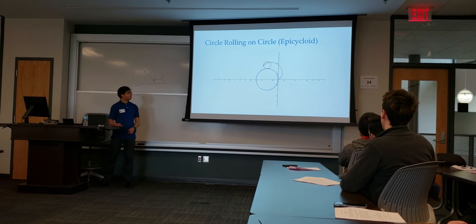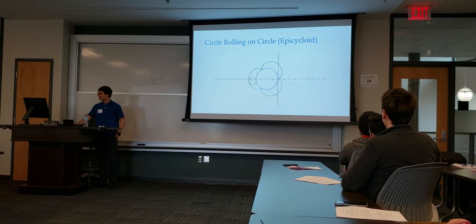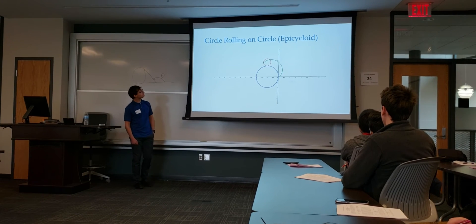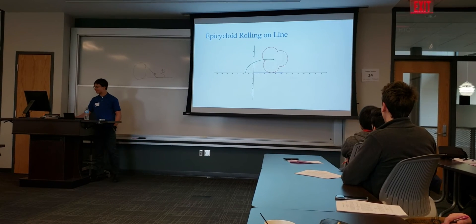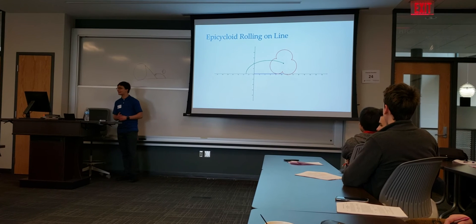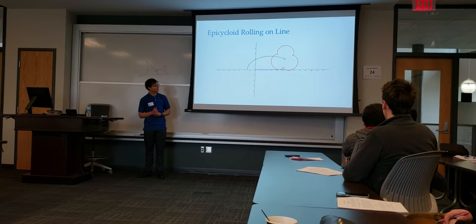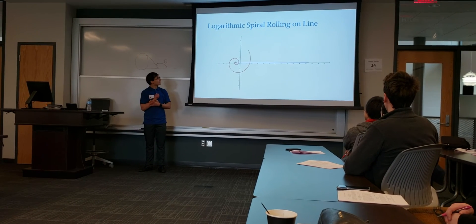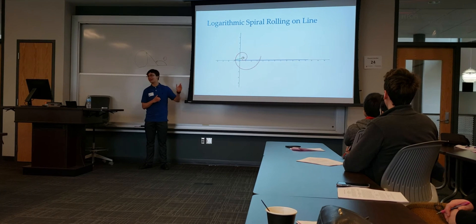A circle rolling on a circle is an epicycloid — and that's actually what my email is, epicycloids at gmail.com. Now we can take that epicycloid and roll it on a line, following the center to create an oval. And the final example is a logarithmic spiral rolling on a line; we follow the center of the logarithmic spiral, and this one traces out a nice diagonal.